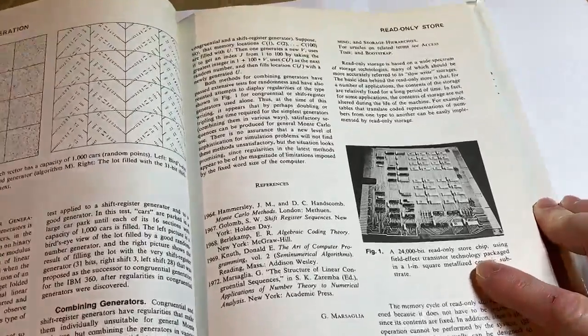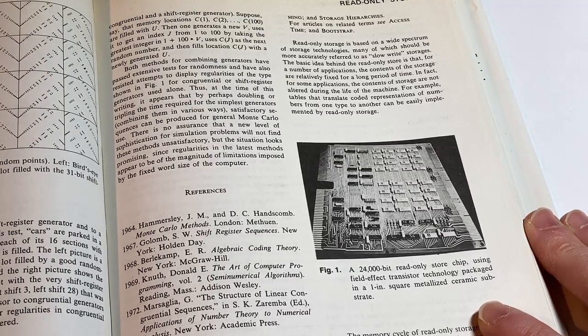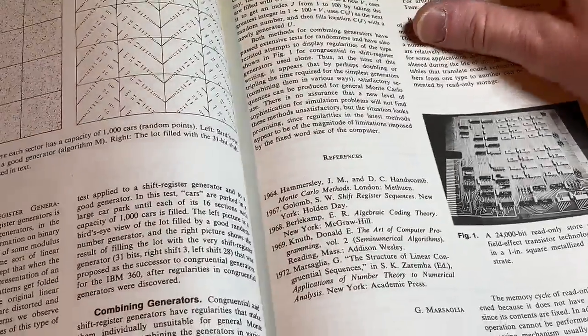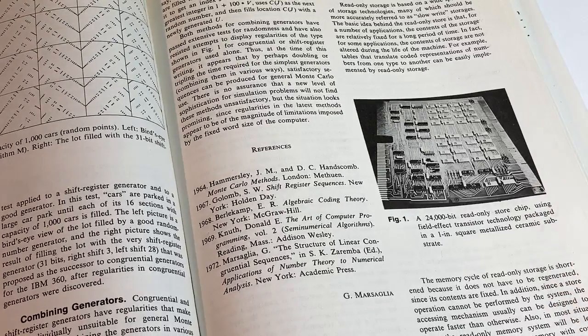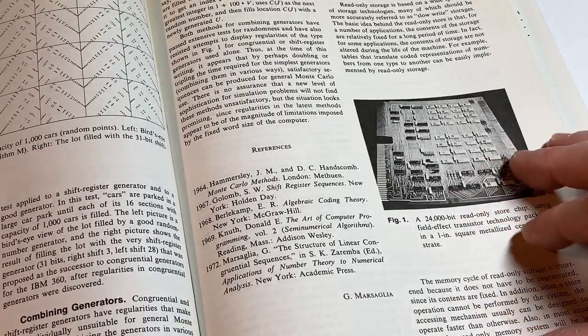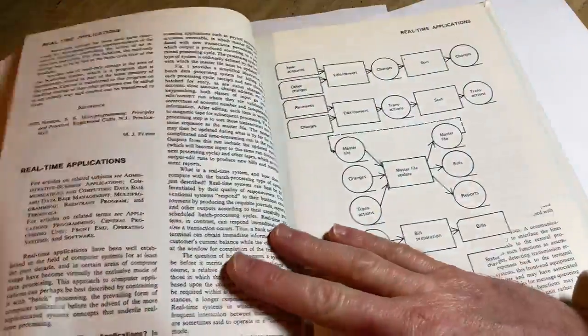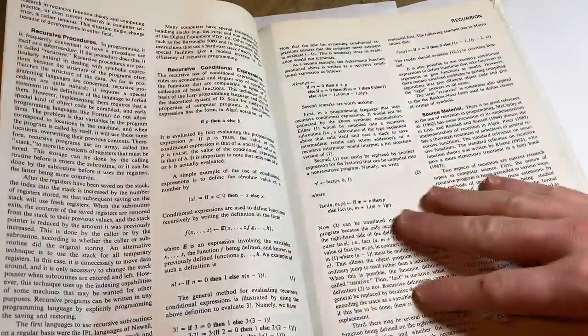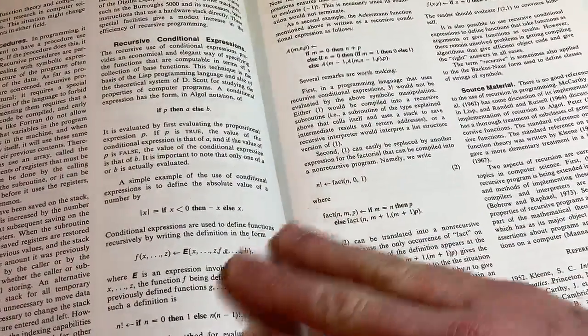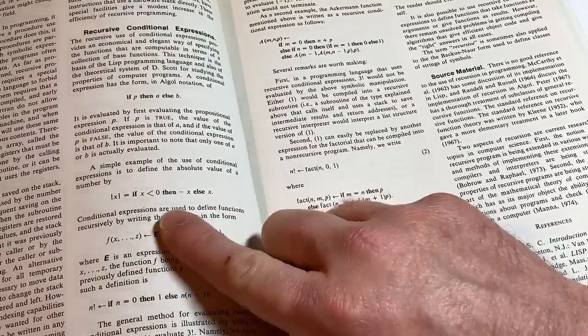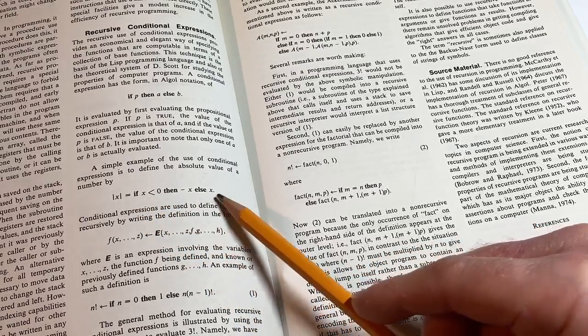Oh, what's this? A 24,000-bit read-only store chip using a field-effect transistor. Technology packaged in a one-inch square metalized ceramic substrate. Actual hardware. There's a lot of people. I've actually, I've known people, in real life, not just on the internet, who work with electronics. And they build things. Like, they build radios and stuff like that. And I think that's really cool. I think that's something that someday I might dabble in. Because it's kind of interesting. Because a lot of it can be explained with mathematics. But then you have this physical thing, which is nice. Oh, what's this? A simple example of the use of conditional expressions is to define the absolute value of a number as follows. The absolute value of x. If x less than 0 is negative x, else x.